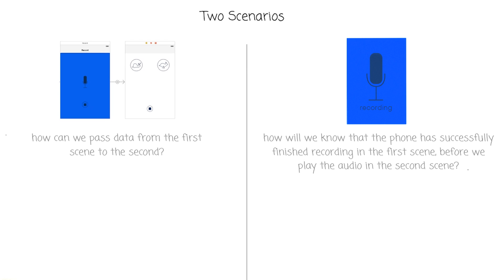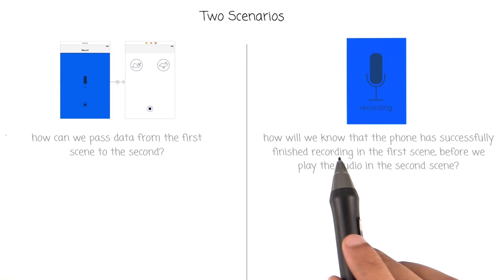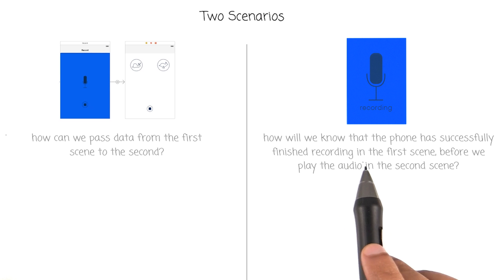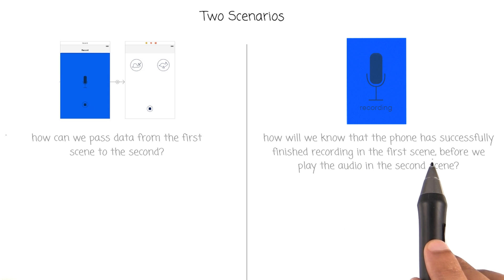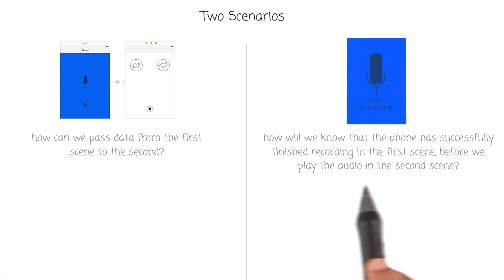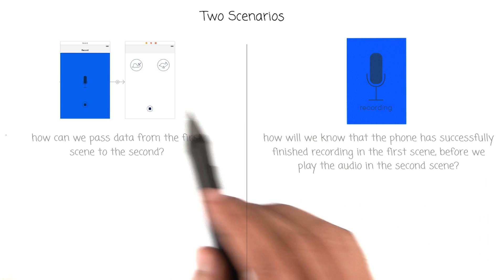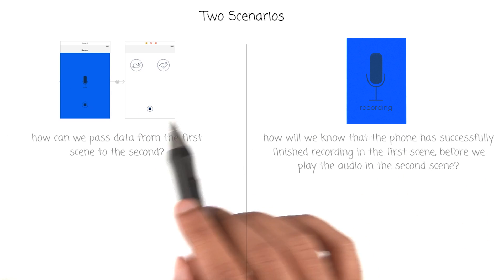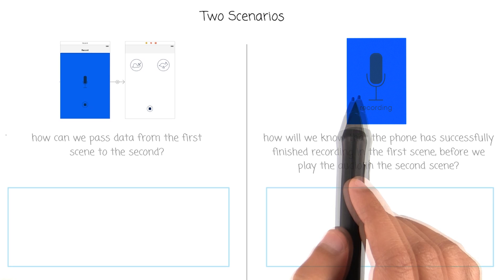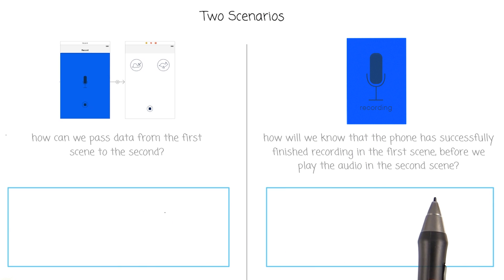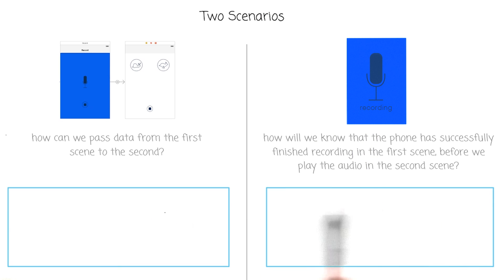So then the question is, how will we know that the phone has successfully finished recording in the first scene, before we play that audio in the second scene? Now, I want you to think about both of these scenarios, and then write down your reflections in these boxes on how you would go about solving both of these issues.